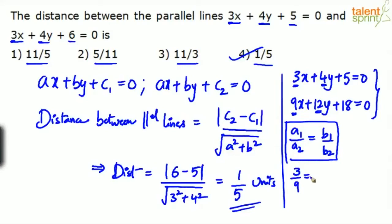So 3 by 9 is equal to 4 by 12. 3 by 9 is 1 by 3, 4 by 12 is also 1 by 3. Hence, the two lines are parallel. Since the ratio of the coefficients of x and the coefficients of y is equal, the two lines are parallel.